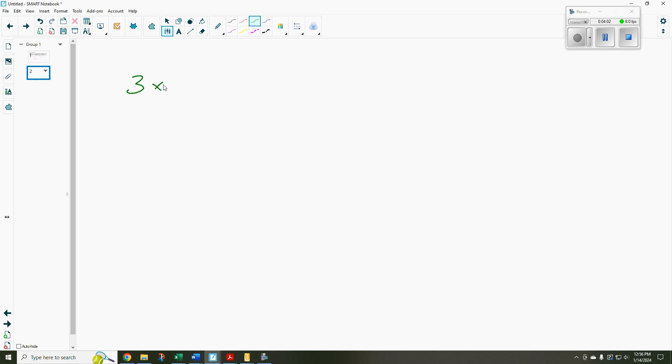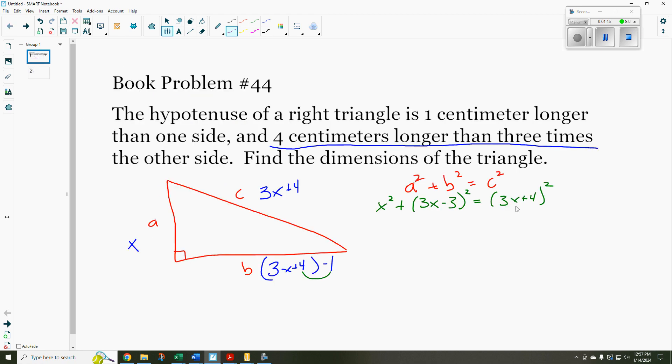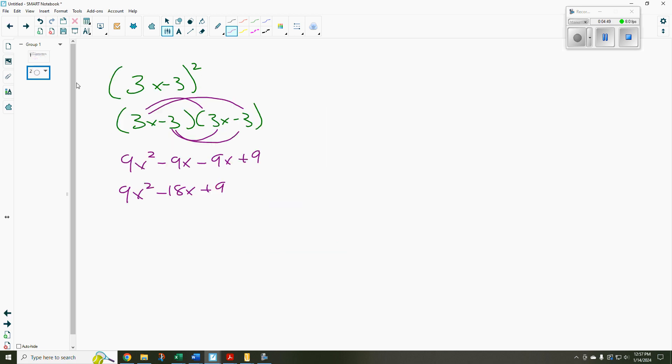Three x minus three squared is the same thing as three x minus three times three x minus three. And if I FOIL that out, like we know how to do, I get nine x squared minus nine x. And then I'm going to go another minus nine x and then plus nine. So I get nine x squared minus 18 x plus nine. Well, that's a good start. And then over here, I need to square three x plus four.